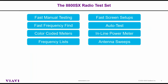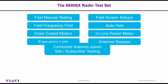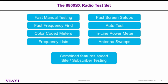Fast and manual testing: there's a fast frequency find feature that we'll look at, color-coded meters, frequency lists, and a fast way to transition from one screen setup to another. There's automated testing, an inline power meter with unique features, and antenna sweeps. All of these things combined really speed up site and/or subscriber testing.